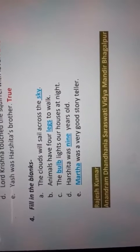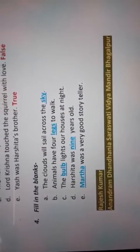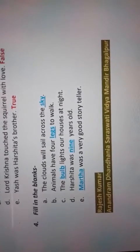The clouds will sail across the dash. Answer is sky. The clouds will sail across the sky. Animals have four dash to walk. Answer is legs.